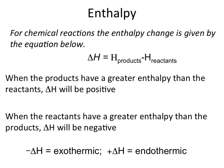For chemical reactions, delta H — the change in enthalpy — is directly related to the difference between the enthalpy of your products and your reactants. When the enthalpy of products is greater than reactants, delta H is positive. Conversely, if products have smaller enthalpy than reactants, you get a negative delta H. At constant pressure, delta H corresponds directly to Q.